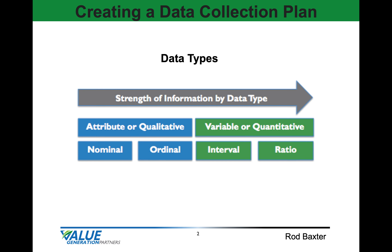First, let's talk about data types and the strength of the information by data type. The first two groups are attribute or qualitative data — that's nominal and ordinal. Nominal is simply names, like go, no-go, good, bad, different colors, different locations, different brands, while ordinal is ordered data.